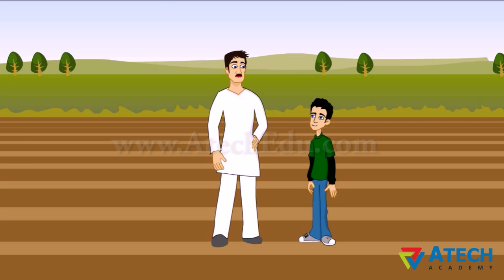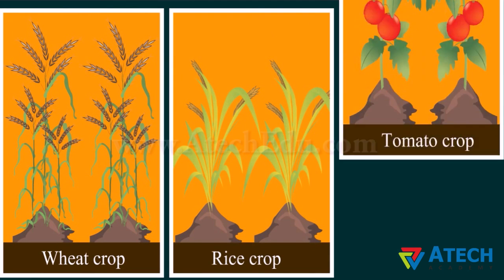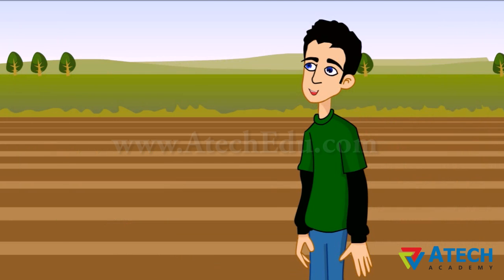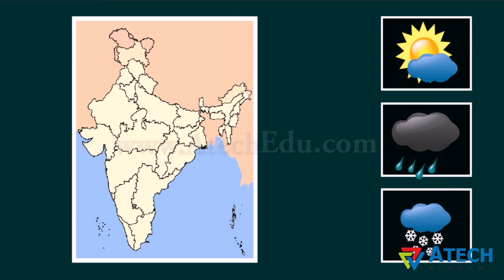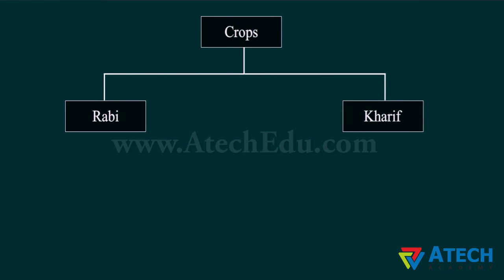We can have wheat crop, rice crop, or tomato crop — so it means we can have a cereal crop, a vegetable crop, or a fruit crop. But can we prepare these crops anywhere and at any time of the year? In India, climatic conditions like temperature, humidity, and rainfall vary from one region to another. Hence, we have different varieties of crops. Crops are broadly divided into two parts: Rabi and Kharif.